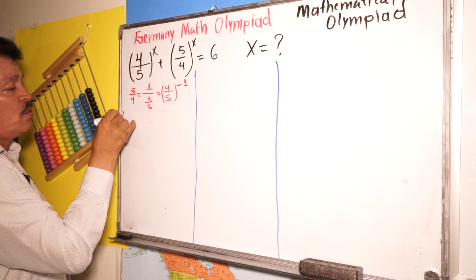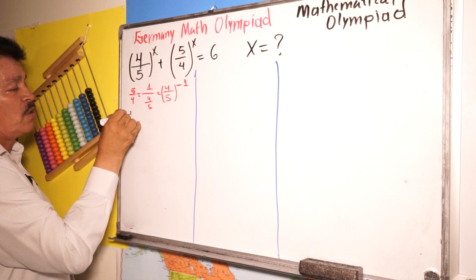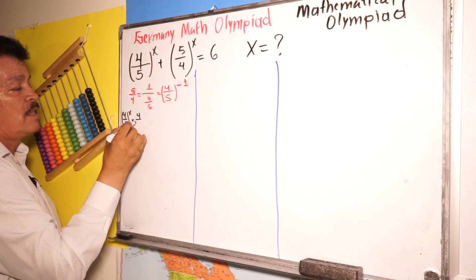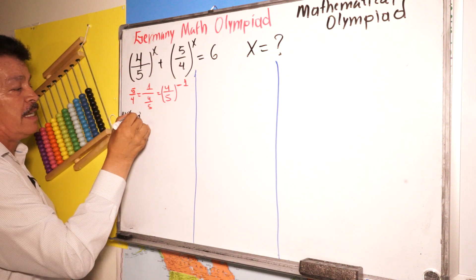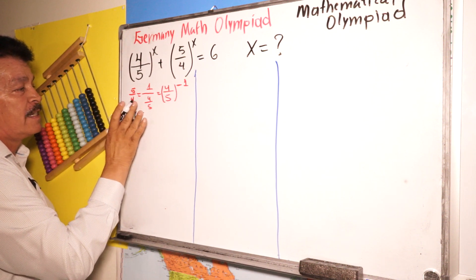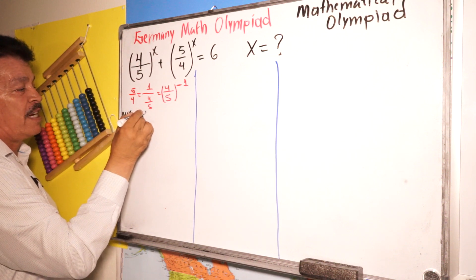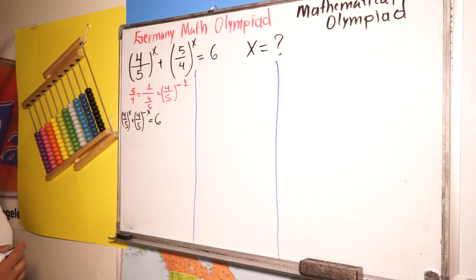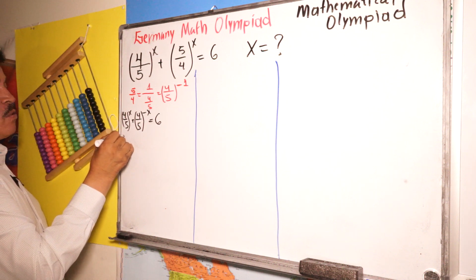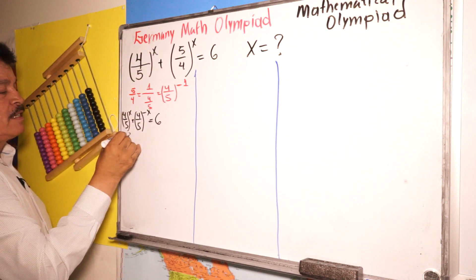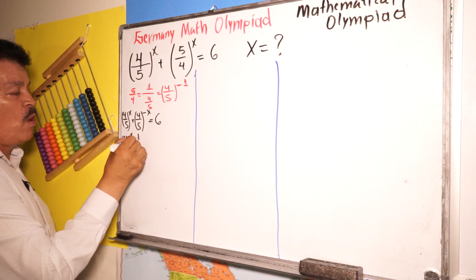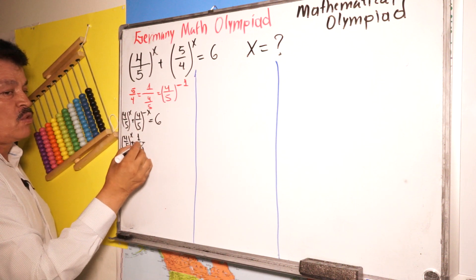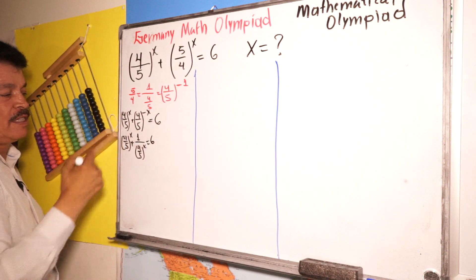So here we write four-fifths to the X power plus four-fifths to the negative X, which equals six. Now let's write four-fifths to the X power plus one divided by four-fifths to the X power equals six. It's the same thing.